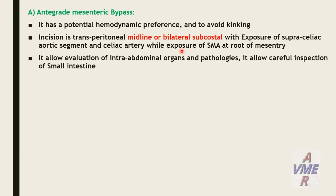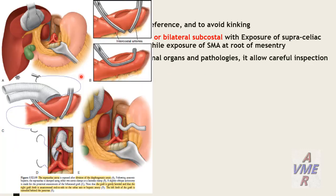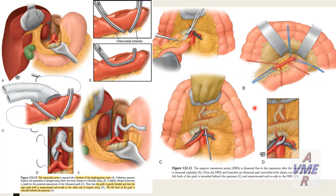The incision is a transperitoneal midline or bilateral subcostal approach with exposure of the supra-celiac aortic segment and celiac artery. Exposure of the superior mesenteric artery is at the root of the mesentery and allows evaluation of intra-abdominal organs and careful inspection of the small intestine. The celiac trunk and supra-celiac aorta are exposed in the lesser sac within the hepatogastric ligament. The inflow from the supra-celiac aorta provides one limb to the celiac trunk and another passing through the root of the mesentery to the superior mesenteric artery.